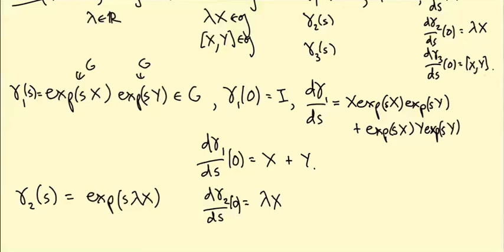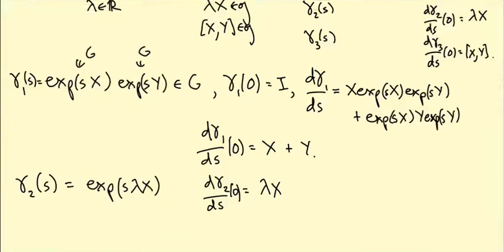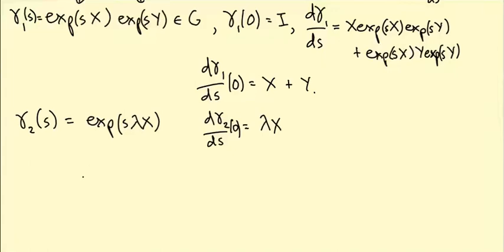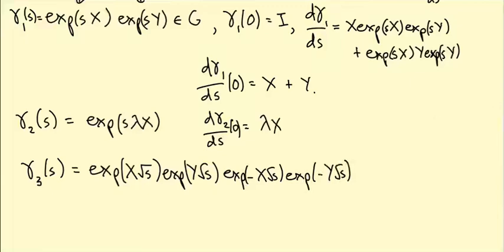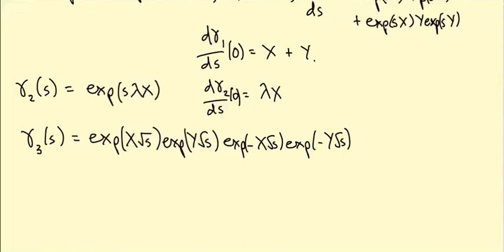The third path is trickier — we need a path whose derivative is [X,Y]. As before, we look for exponentials with the desired quantity in the exponent, and we recall that the Baker-Campbell-Hausdorff formula contains a term like [X,Y]. So we take γ₃(s) = exp(X√s)·exp(Y√s)·exp(−X√s)·exp(−Y√s). That looks strange with all the square roots, but there are X, Y, −X, −Y terms, so you might hope to get something like the commutator when multiplied out.